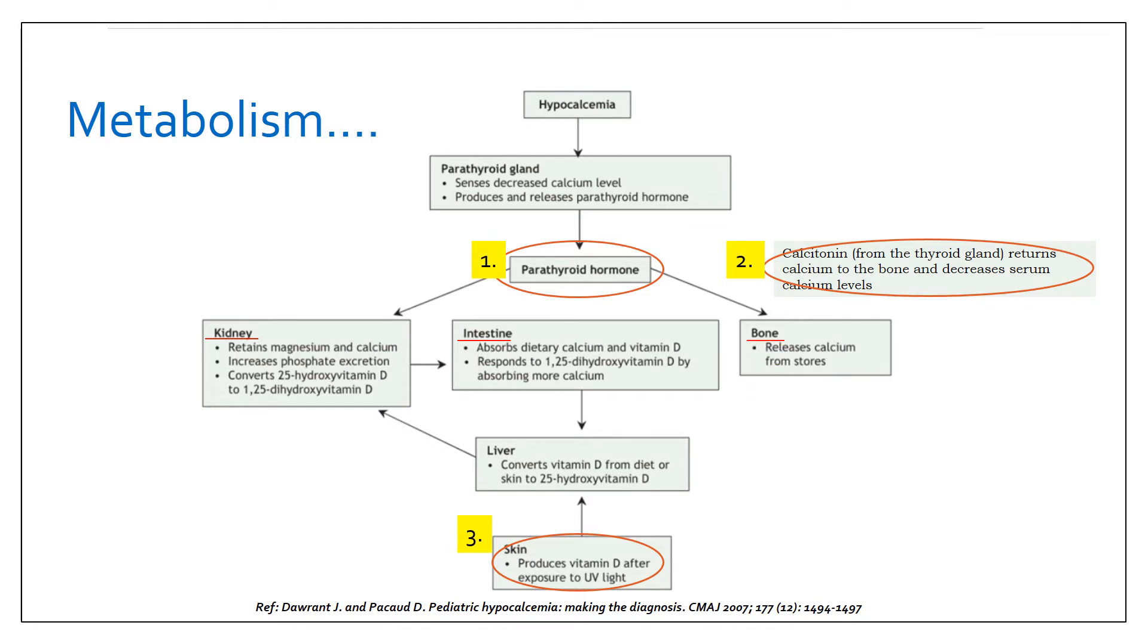Bone, the major storehouse of calcium, if hormones like parathormone are functioning on it, then it causes bone resorption and increases the calcium levels in blood. Calcitonin in turn causes deposition of calcium to the bone and decreases the serum calcium levels.